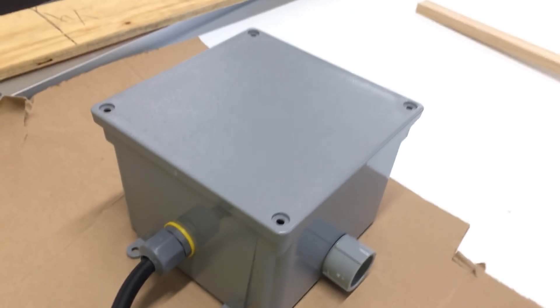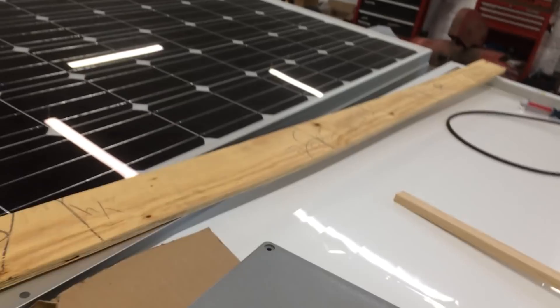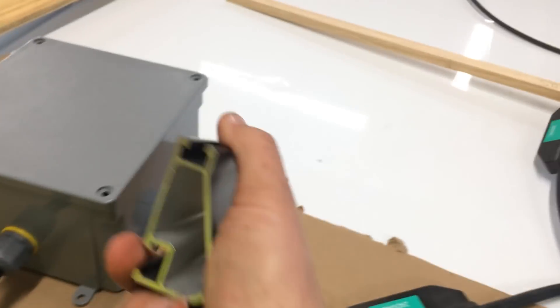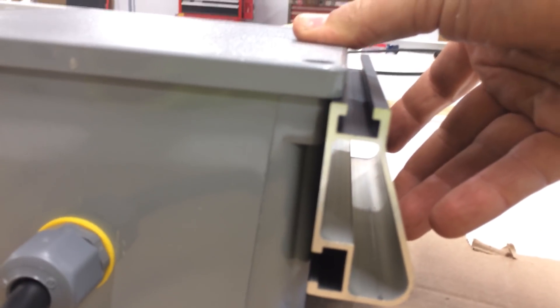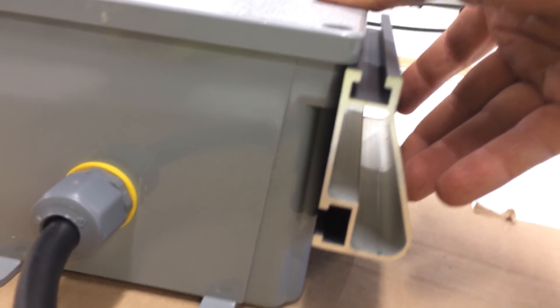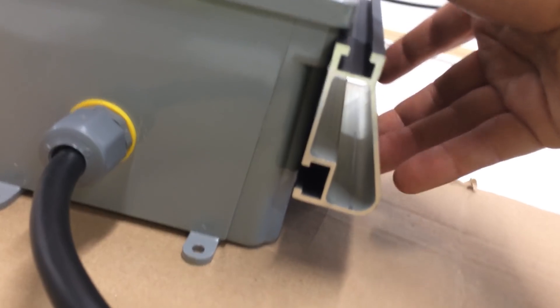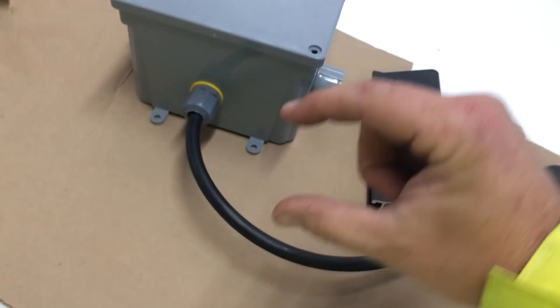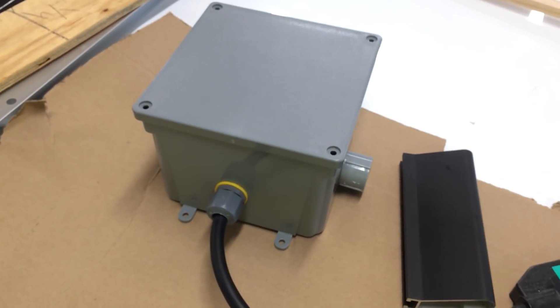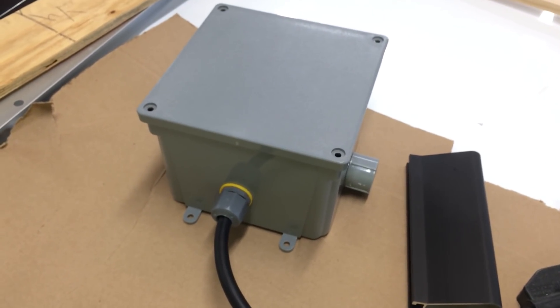I should be able to use self-tapping sheet metal screws to go right through from the inside of the box, and then bolt it right onto the Iron Ridge racking. And there's still space between the box and the roof. So I should be able to mount that up there. That's my plan anyways.